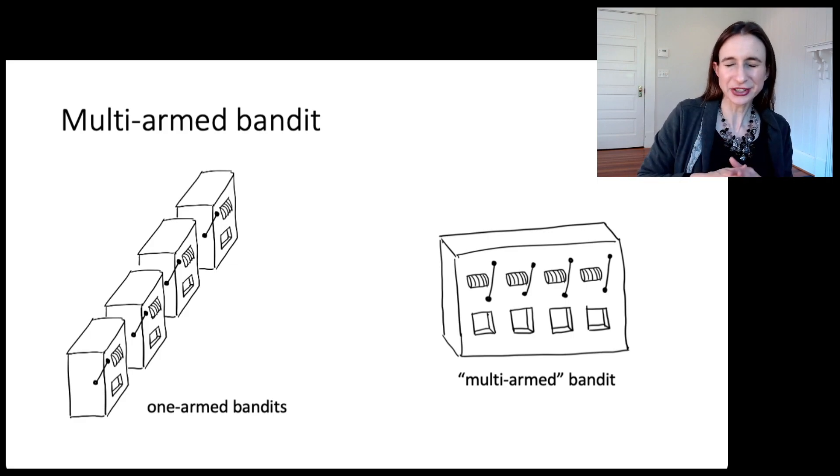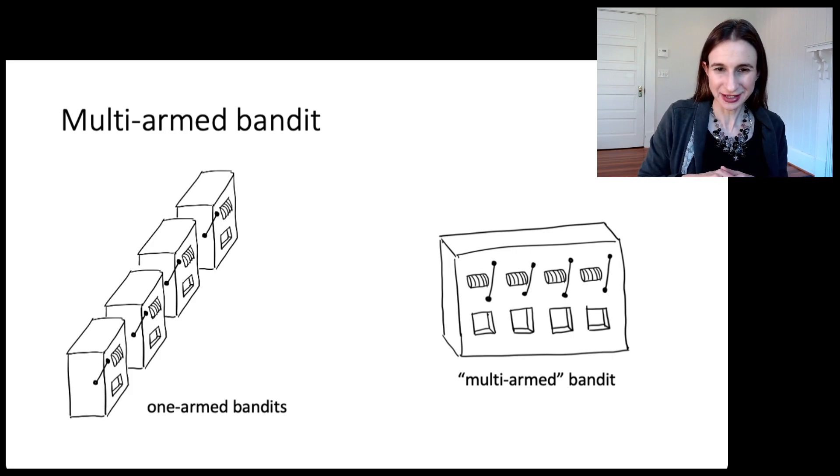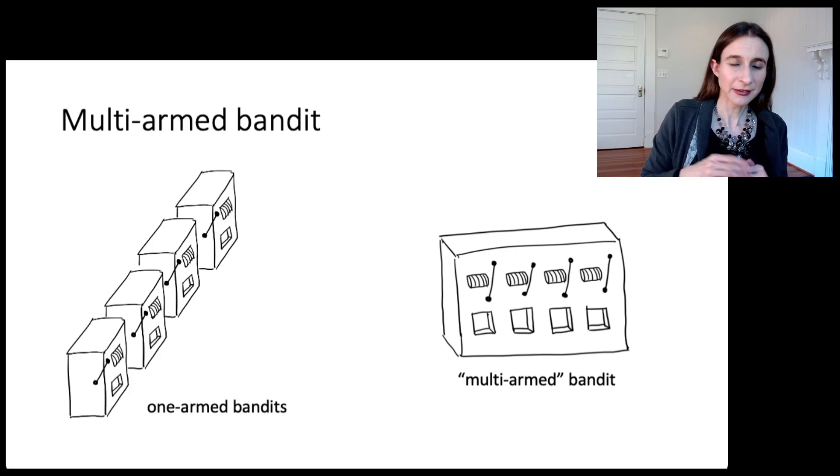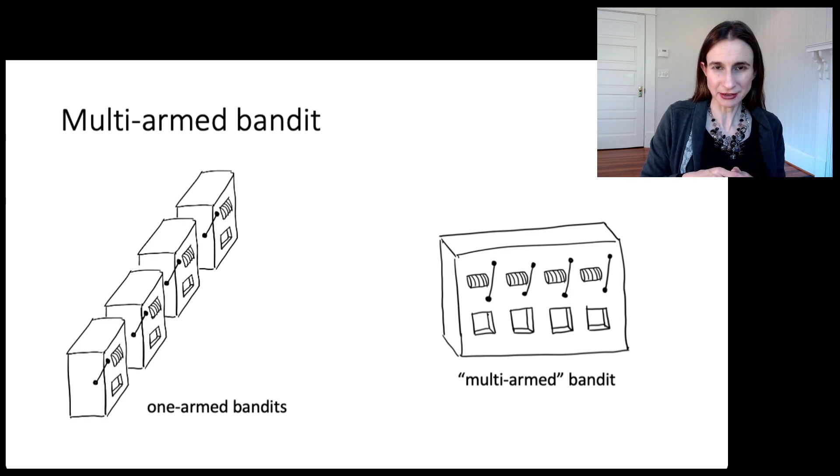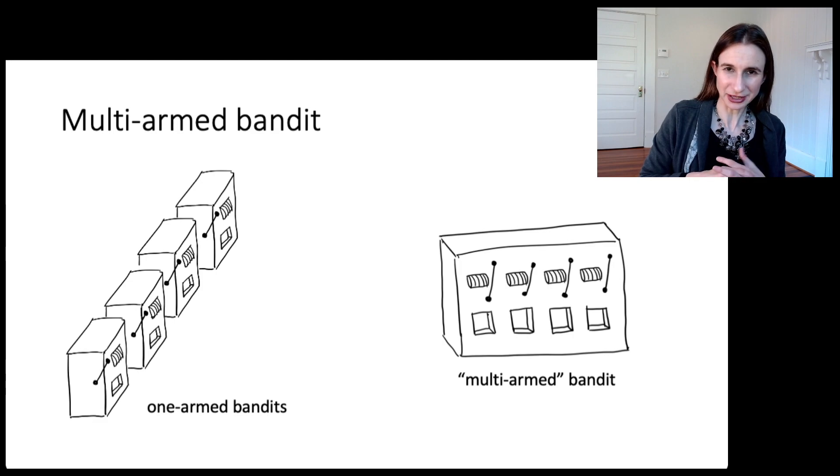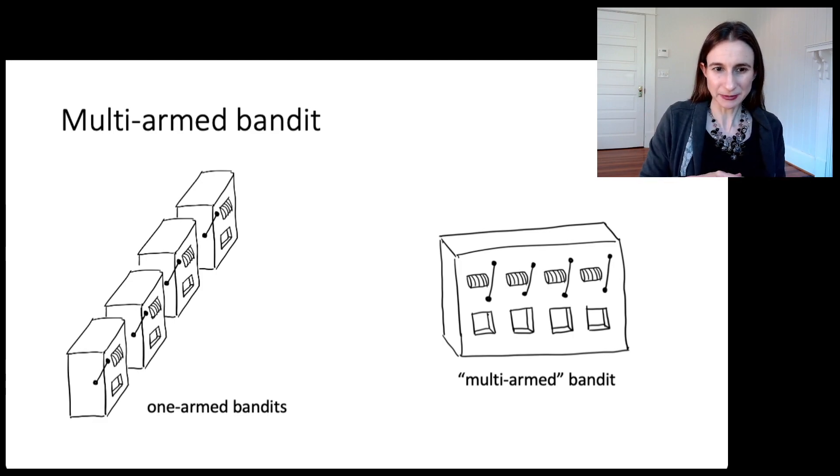In a multi-armed bandit you could think of it as a machine with multiple arms. Some of the arms have higher probabilities of rewards than other arms. So what should your strategy be when you walk into the casino? You only have a limited time and you want to get as much rewards as possible. If you knew which arm was the best, you would pick that one all the time, but the problem is you don't.